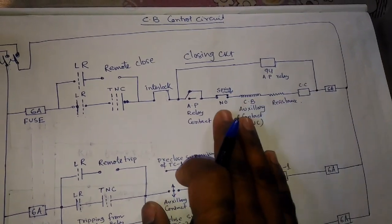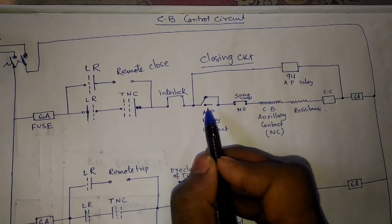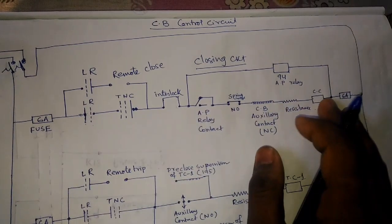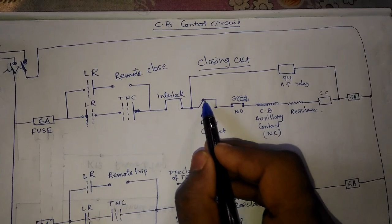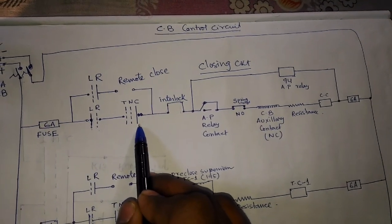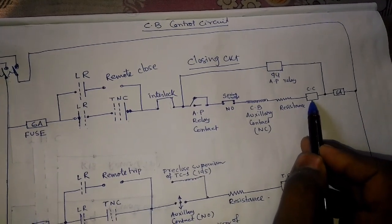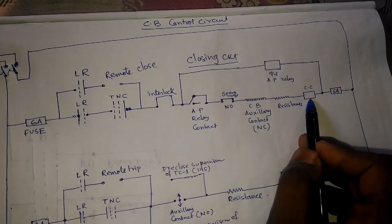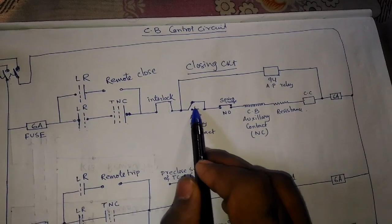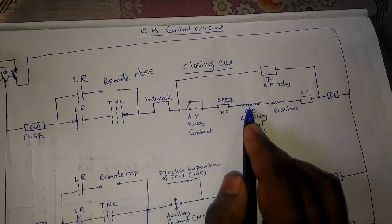After the closing command is executed and the circuit breaker is properly closed, the anti-pumping relay NC contact will change to NO contact. This path is cut by this NO contact. So if the LR switch or TNC switch is malfunctioning, the circuit breaker will not receive the closing command repeatedly. The closing coil and circuit breaker will be safe. By the anti-pumping relay, we cut this NC contact to NO contact and this path becomes inactive.